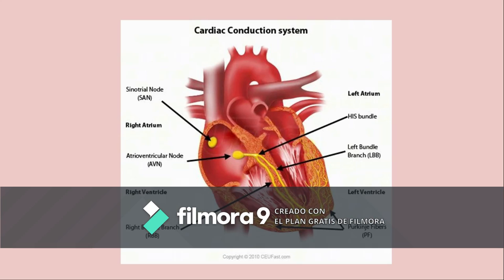First, the electric impulse starts in the sinoatrial node, known as the heart's natural pacemaker, located where the superior vena cava and the right atrium meet. Second, throughout nerve fibers traveling through the right atrium, the electric impulses reach the atrioventricular node, located where the right atrium and ventricle meet. Third, the bundle of His, located in the interventricular septum, receives these electric impulses. Fourth, the bundle of His is divided into branches known as Purkinje fibers, which transmit the electric signal to the entire cardiac muscle and generate its contraction.